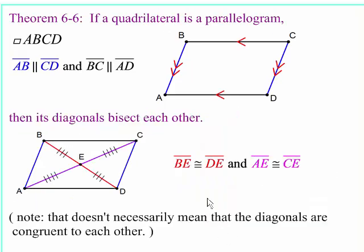Theorem 6-6. If the quadrilateral is a parallelogram, then the diagonals bisect each other. And so, we have the diagonal AC, and E is a midpoint. So AE is congruent to EC. And E is also the midpoint for diagonal BD. So BE is congruent to ED.